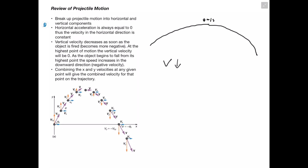Combining the x and y velocities at any given point gives the combined velocity for that point on the trajectory. Looking at a sample point on the trajectory, we see a horizontal velocity component pointing horizontally and a vertical velocity pointing downward. We combine these like vector addition, and the resultant is the actual velocity for that point on the trajectory.